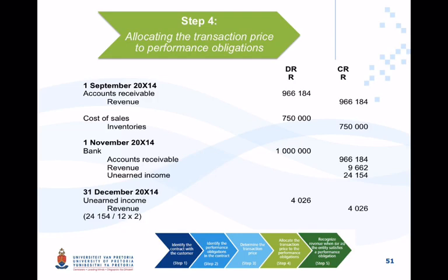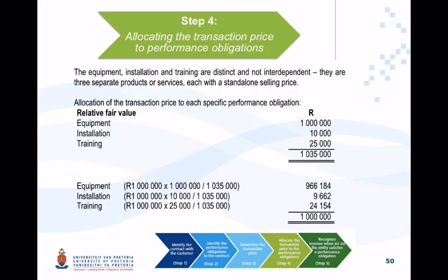To calculate these amounts, you use the relative fair values — or standalone selling prices — for each component. Equipment is usually sold for 1 million Rand; installation at 10,000 Rand; and training at 25,000 Rand. The total relative standalone selling prices therefore amount to 1,035,000 Rand.